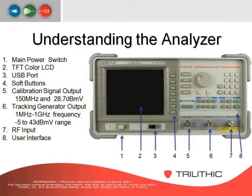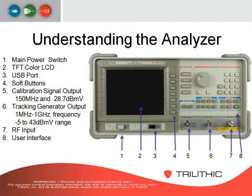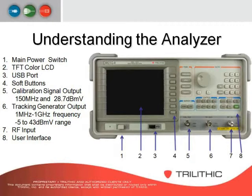You have a tracking generator output, which is number six. The tracking generator allows you to sweep from 1 MHz to 1 GHz, and it sends out a signal level from minus 5 to 43 dBmV. This is very useful for sweeping, looking at the frequency response of traps or taps, examining diplex filters to see where your roll-offs are. It's excellent for bench testing.